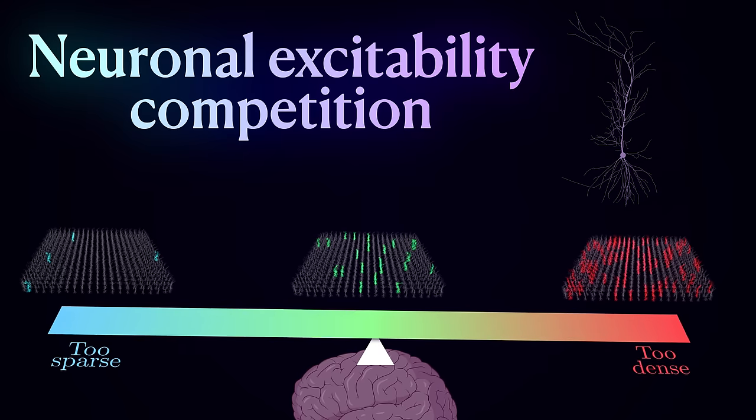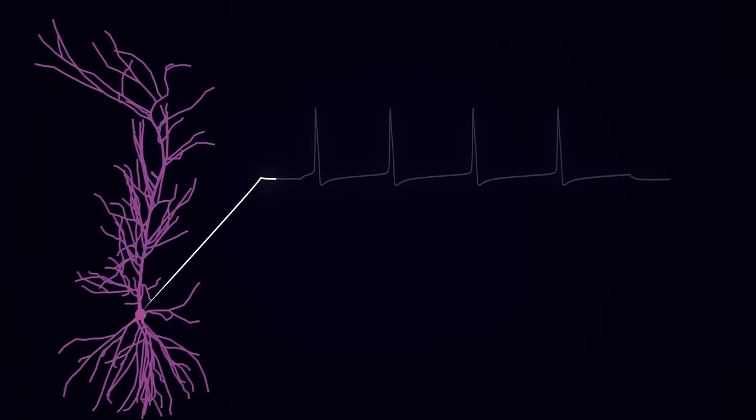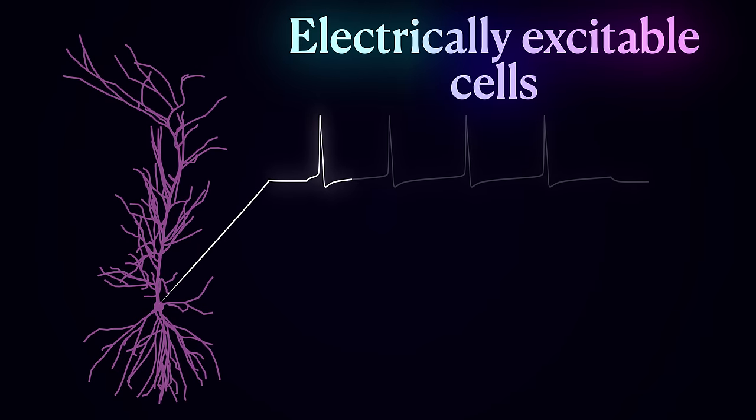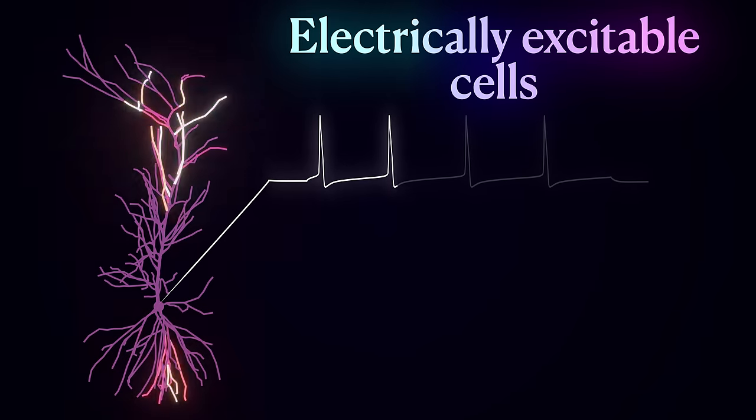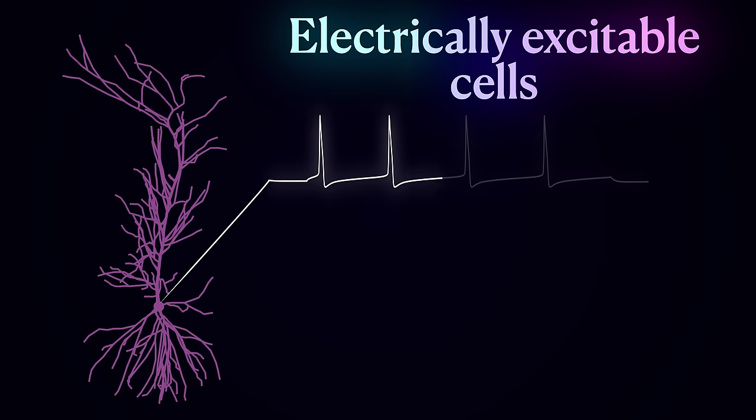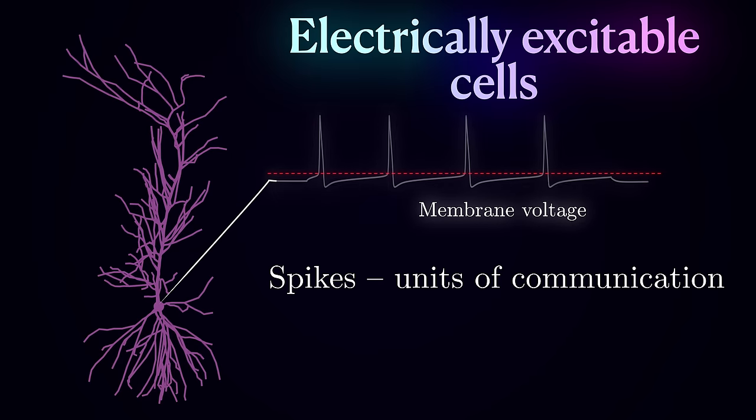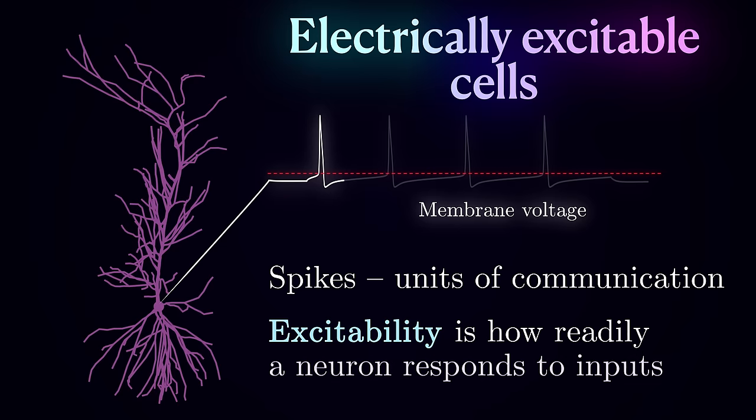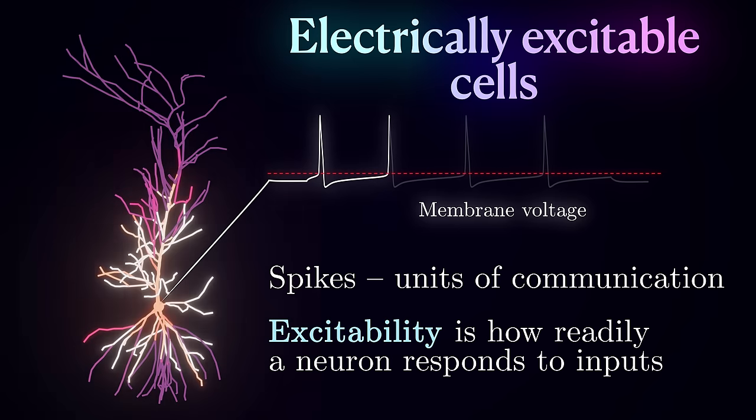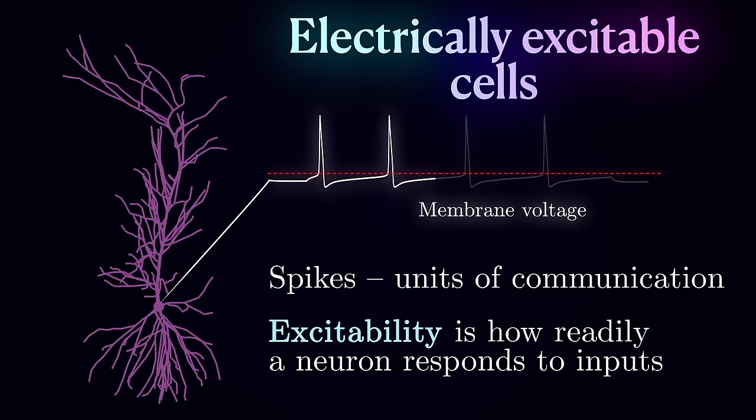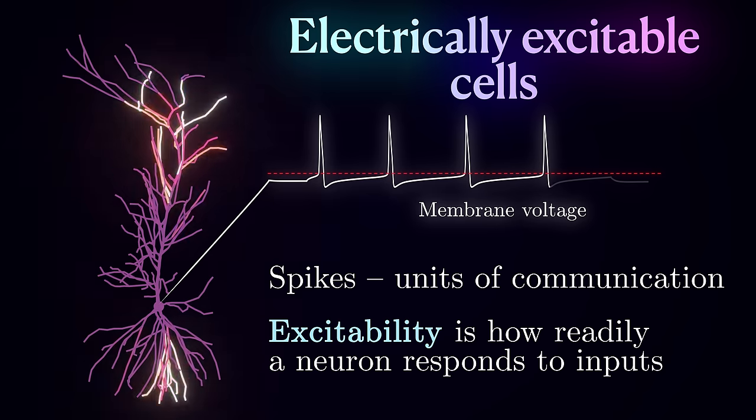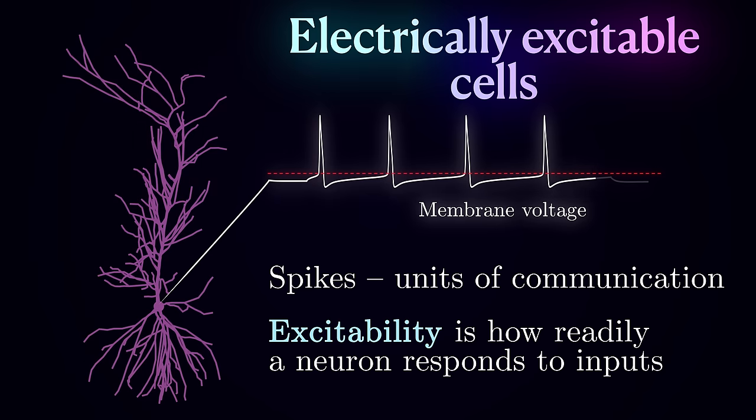Let's unpack what this means. As you probably know, neurons are electrically excitable cells. To send bits of information, they generate brief pulses of electricity called action potentials or spikes. Spikes are born when the voltage on the neuron's membrane crosses a certain threshold. The intrinsic excitability of neurons refers to their inherent ability to change membrane voltage and generate action potentials in response to various stimuli. It is like the readiness of a neuron to fire and transmit information.